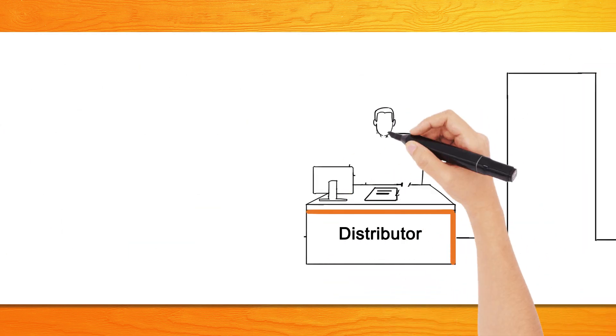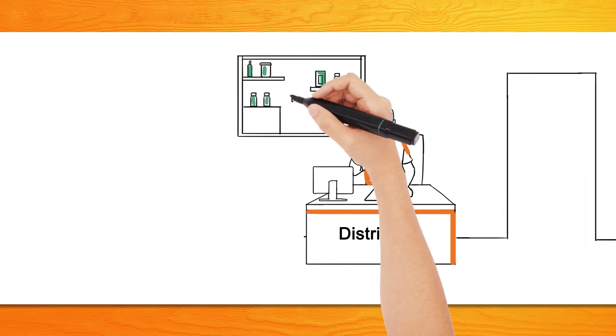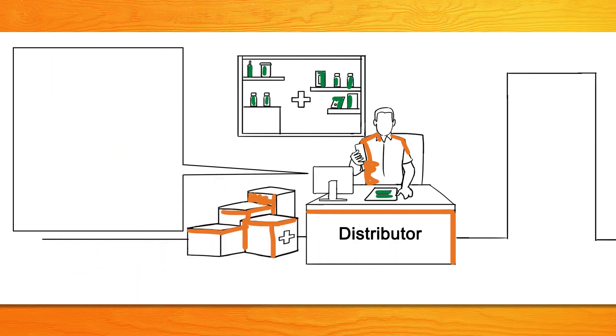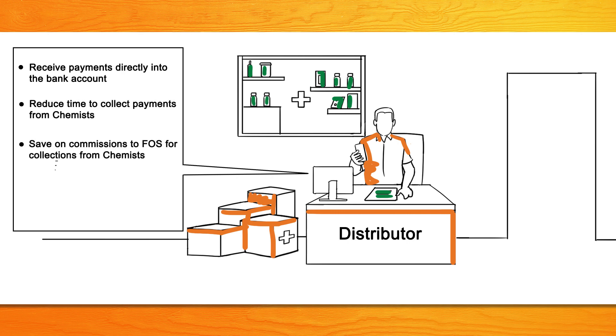With UPI, the distributor can receive payments directly into the bank account for faster reconciliation, reduce time to collect payments from chemists, save on commissions to feet on street FOS for collections from chemists, and increase business with feet on street covering more chemist shops.